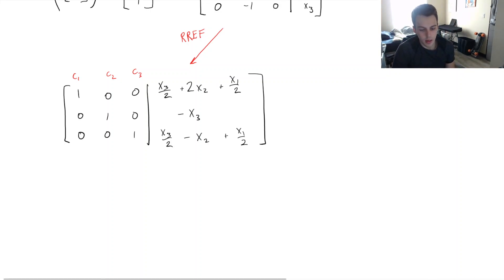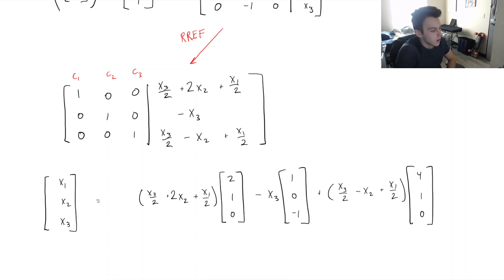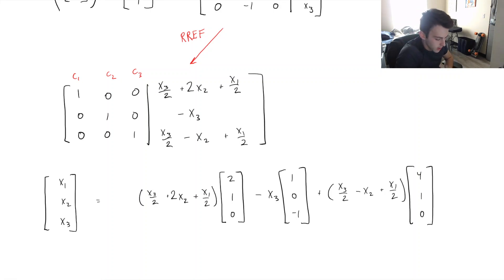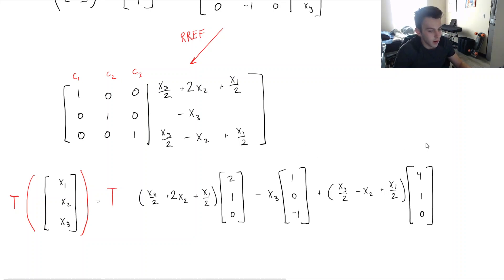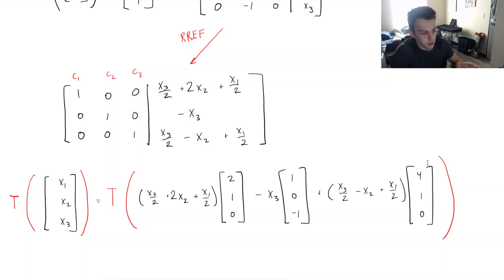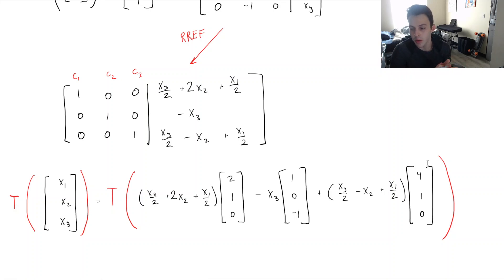Writing out the linear combination using the results from reduced row echelon form, if we take the linear transformation T of both sides, we get T of any vector x equals this whole right-hand side. Ideally, if we can express this as a coefficient matrix times a vector, we will have found the standard matrix. We want to focus on simplifying the right-hand side.